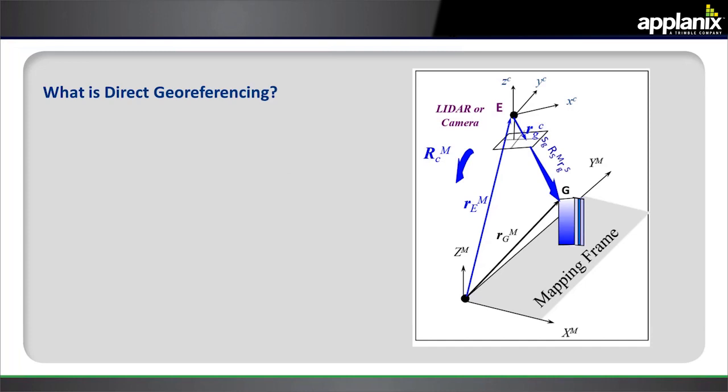So what is direct georeferencing? Well, as the name implies, we measure position and orientation of an imaging sensor and use that to directly geocode each pixel or point from an imaging sensor in real-world geographic coordinates.